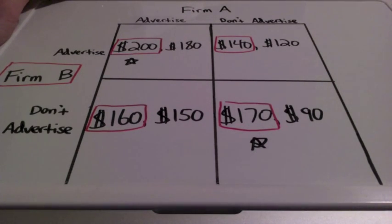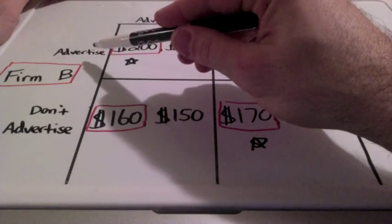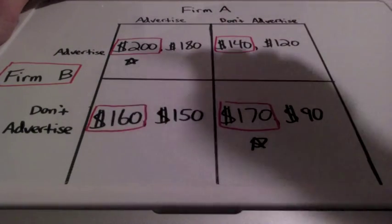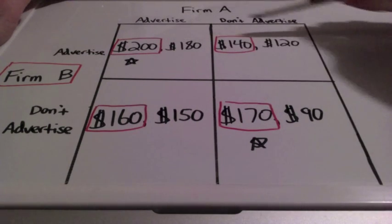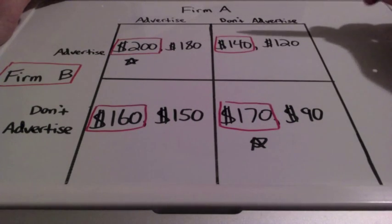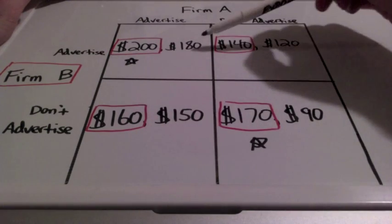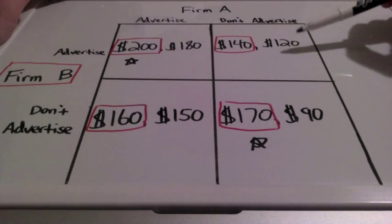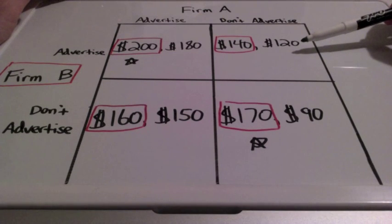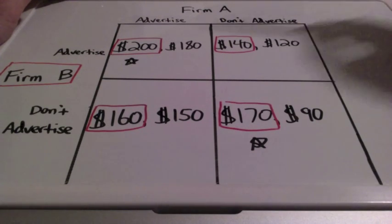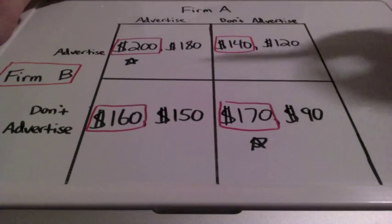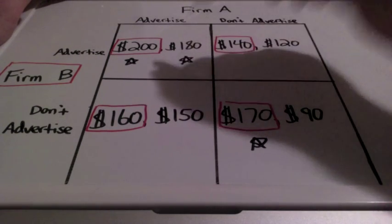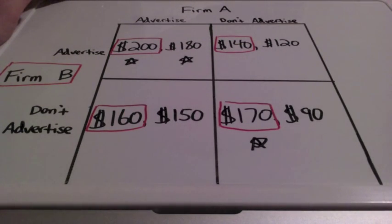When firm B is going to advertise, what will firm A do? We're going to be looking at these two boxes here. Is firm A going to advertise and make $180 in profits, or choose not to advertise and make $120? Well, $180 is greater than $120, so firm A will advertise.